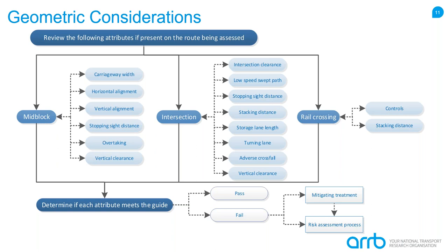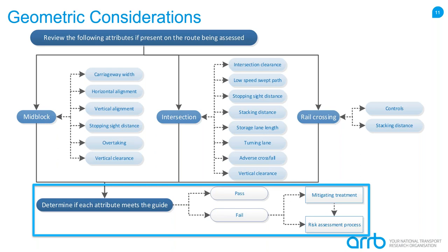Throughout this session we'll only be looking at sections of the guide which have new or updated guidance compared to old or existing guides, meaning a lot of areas won't be covered in great detail. Another part of the flowchart shows the process of determining if each attribute meets the guide. If it passes, no further action is needed. If it fails, you can move to mitigating treatments already in the guide or proceed to a risk assessment process to develop your own mitigating treatments.